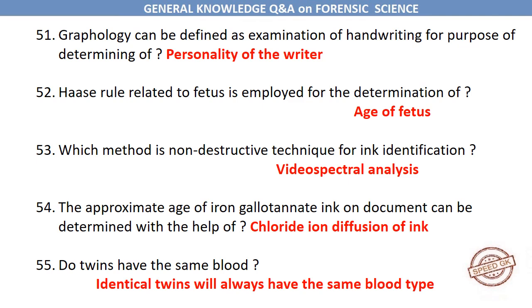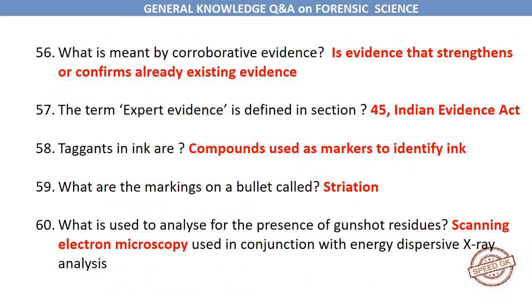The approximate age of iron gallotannate ink on a document can be determined with the help of chloride ion diffusion of ink. Do twins have the same blood? Identical twins will always have the same blood type. What is meant by corroborative evidence? It is evidence that strengthens or confirms already existing evidence. The term expert evidence is defined in Section 45 of the Indian Evidence Act. Tagants in ink are compounds used as markers to identify ink.